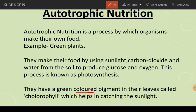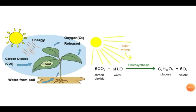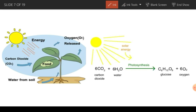How do plants absorb light? They have a colored pigment in their leaves called chlorophyll, which helps them in trapping sunlight. You can see the process of photosynthesis shown as an equation: plants use energy from the sun, carbon dioxide from the air, and water from the soil to make food and release oxygen.